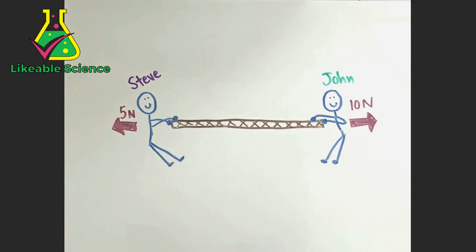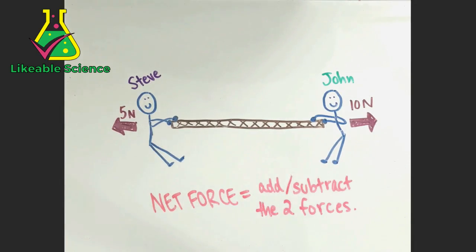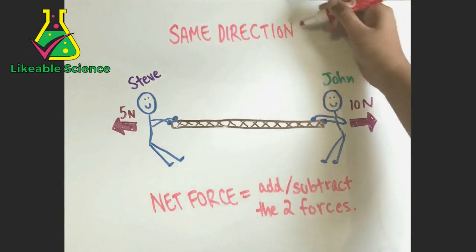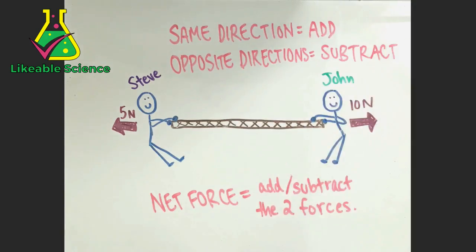To find the net force, we either need to add or subtract the two forces. When two people pull or push in opposite directions, you subtract the two forces. But when they pull or push in the same direction, then you add the forces.